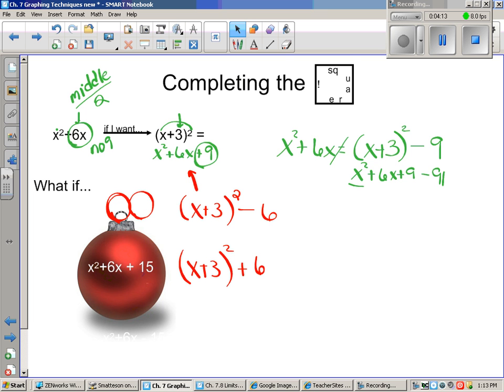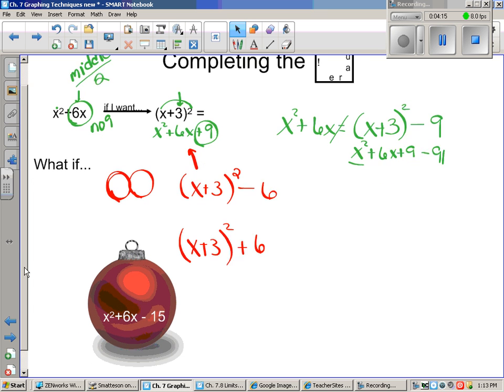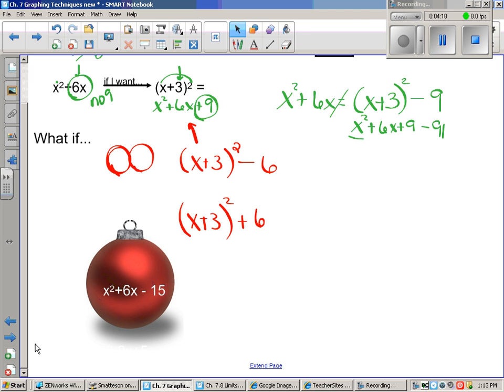Let's try another one. What if instead I had x squared plus six x minus 15? Well the beginning of that of course stays the same. And again that would be x squared plus six x would be plus nine. I want it to equal negative 15. So I'd have to take away the nine and take away 15 more in order to get that piece that I need here. So that would mean I have negative 24.